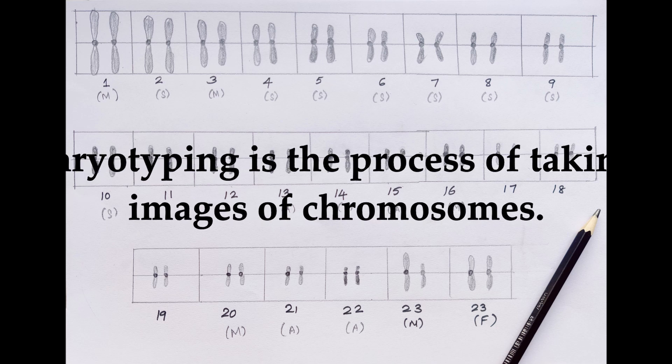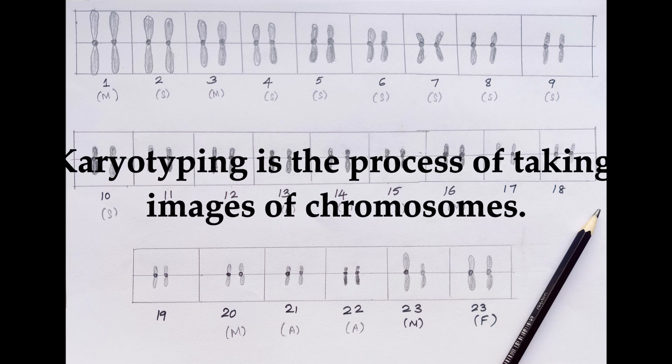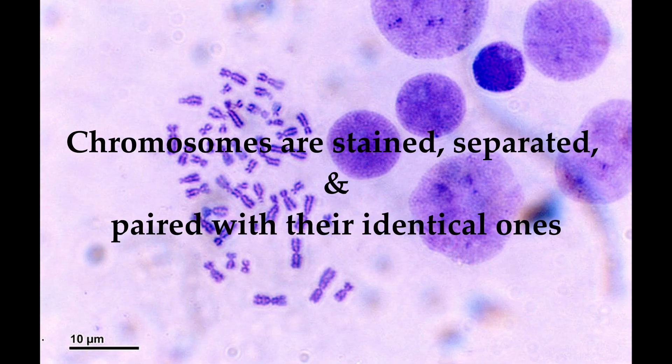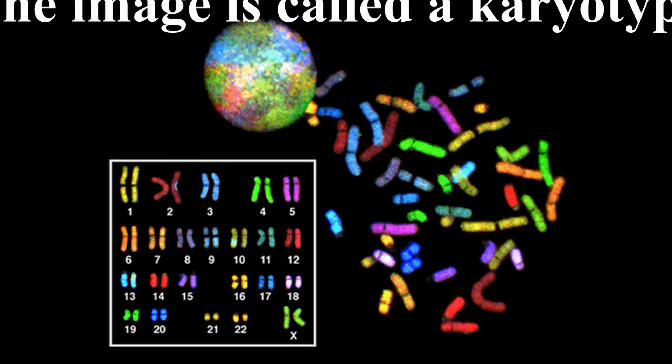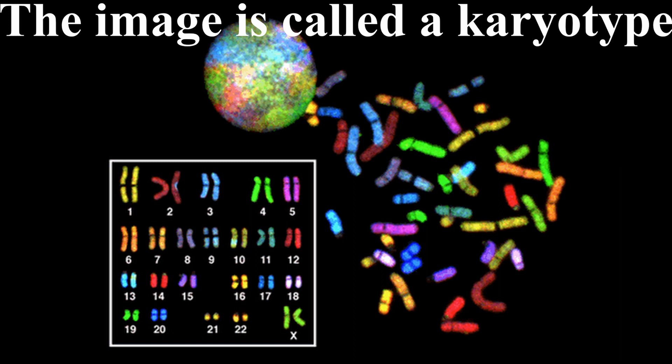Karyotyping is a process of taking images of chromosomes. Chromosomes are stained, separated and paired with their identical ones. The image thus obtained is called a karyotype.